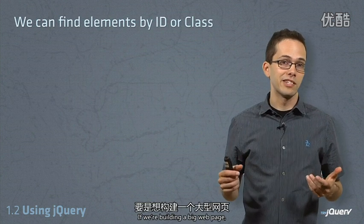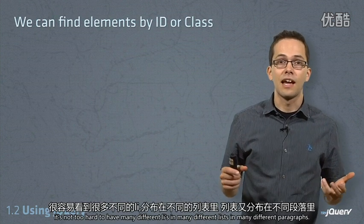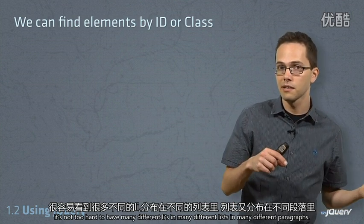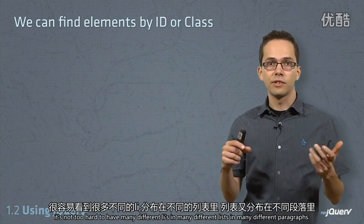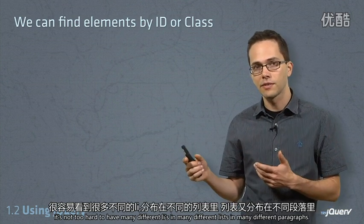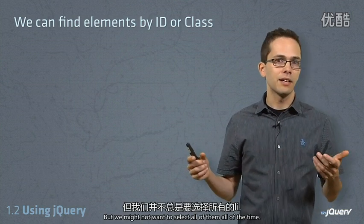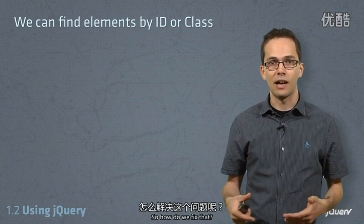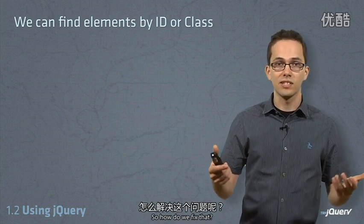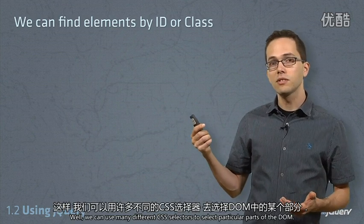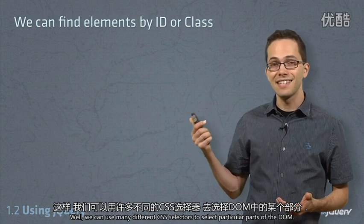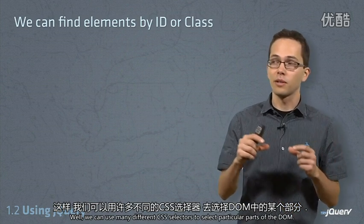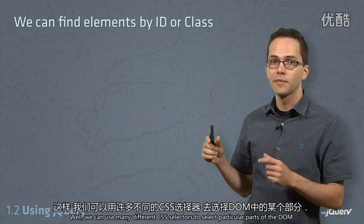If we're building a big web page, it's not unheard of to have many different li's inside many different lists, and many different paragraphs. But we might not want to select all of them all of the time. So how do we fix that? Well, we can use many different CSS selectors to select particular parts of the DOM.